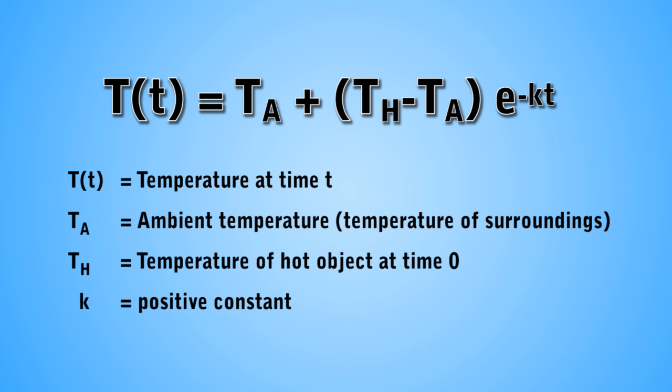Where T(t) is temperature at time t, T_A is ambient temperature (i.e. temperature of surroundings), T_H is temperature of hot object at time 0, k is a positive constant, and t is time.